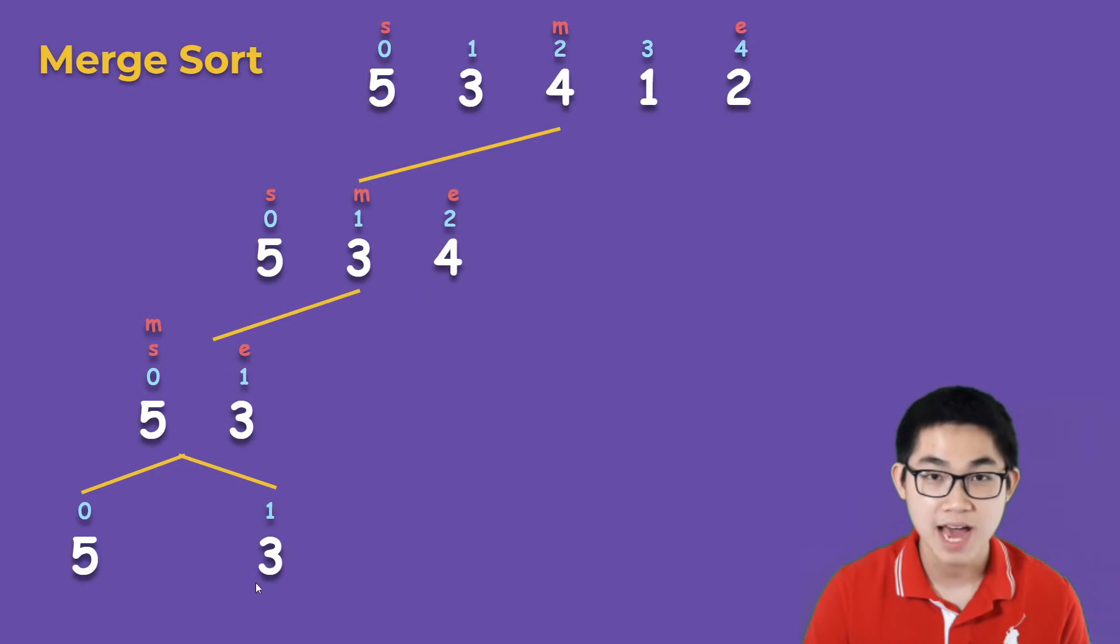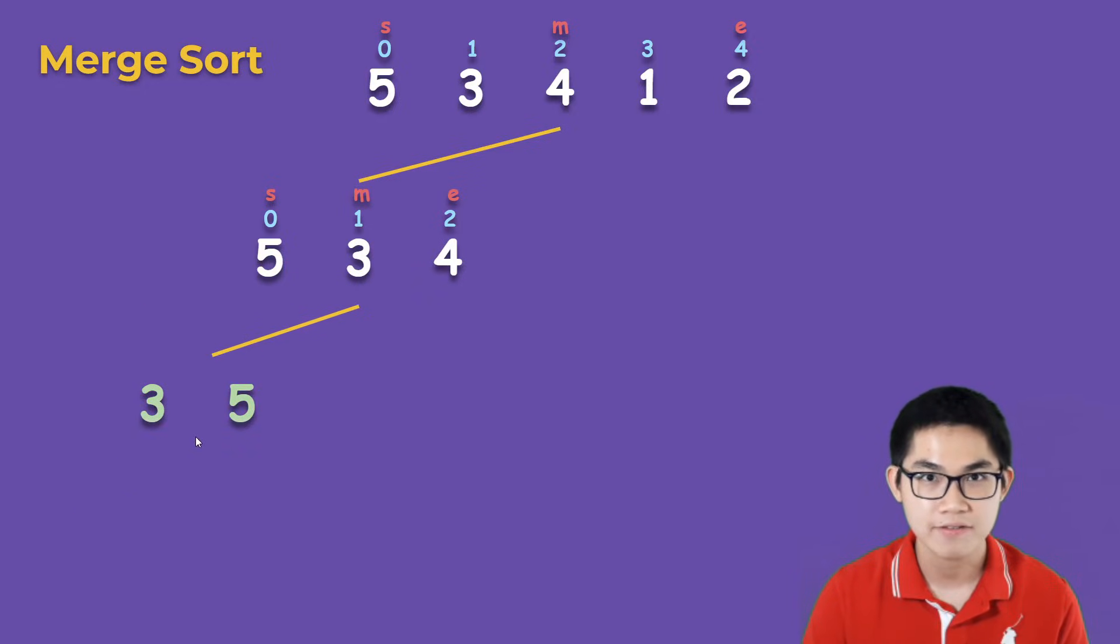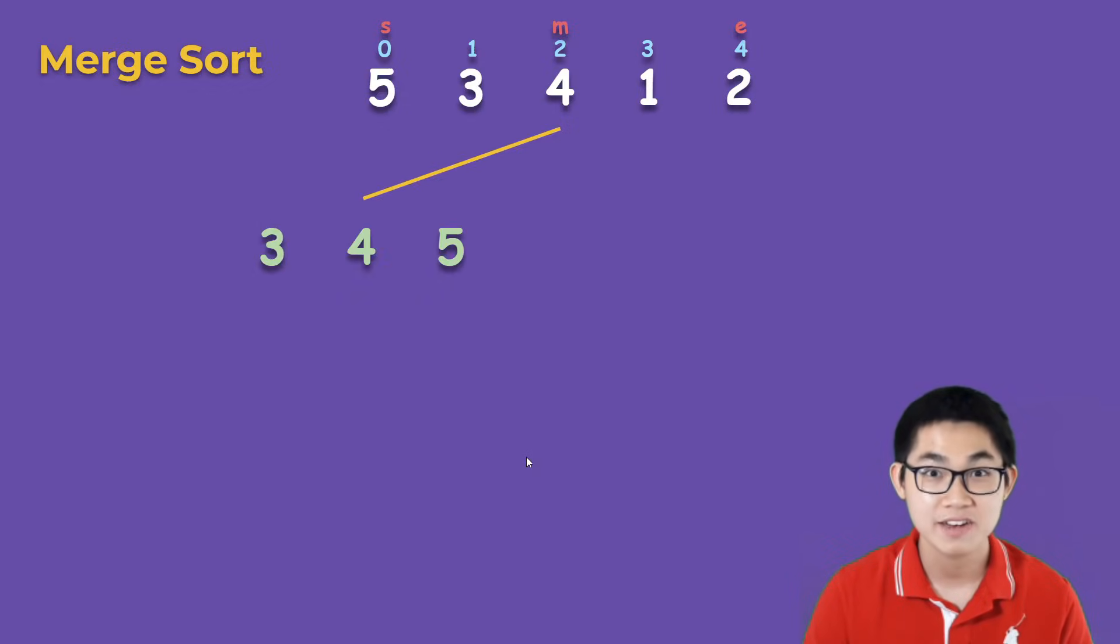The next step is to merge them, so we merge 5 and 3 into 3 and 5, and notice they're in sorted order. The second group in this one is simply going to be 4, and then we merge them together so we get 3, 4, 5.